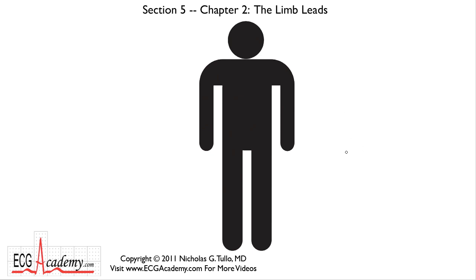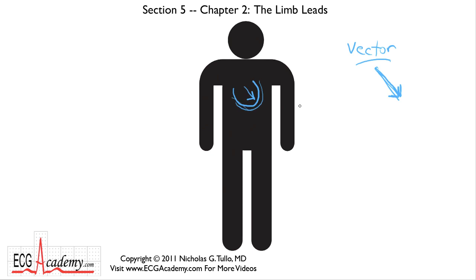Here we are going back to the idea that the heart in the chest is creating this electrical signal that's traveling in a direction, usually down and to the left of the patient. That's the idea of a vector — a vector is an electrical signal that has a direction. So how do we record these vectors and how do these ECG leads make sense?